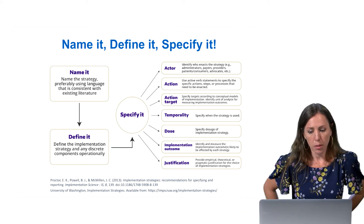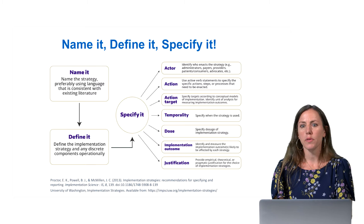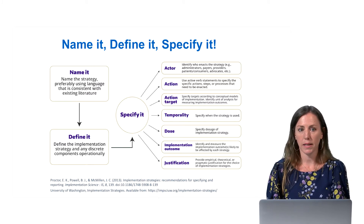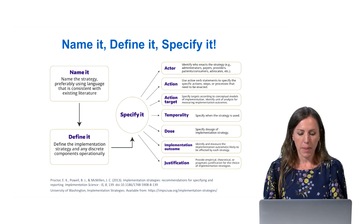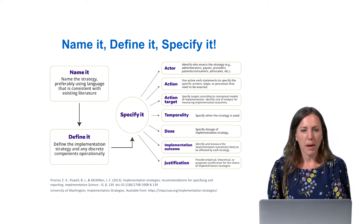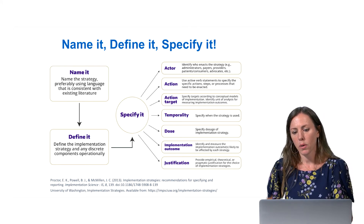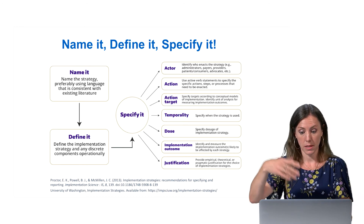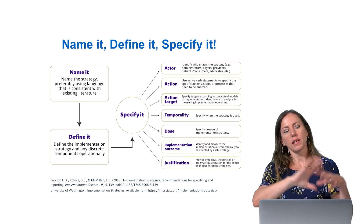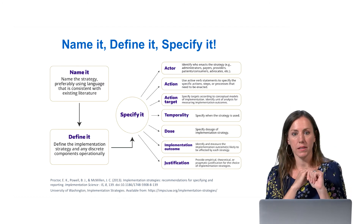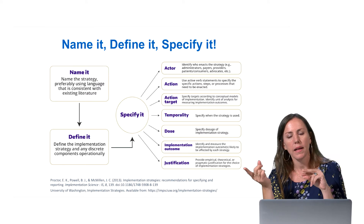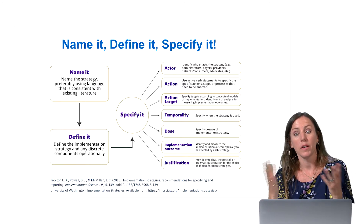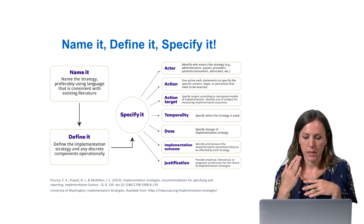As people have started to publish on implementation strategies, we're finding that you can say you're doing a training, but training can mean many things. Byron Powell, Enola Proctor, and others are working towards being really specific about — if you're doing an implementation strategy: who's leading it, who's the actor, what's the action, what's the goal, what's the time period, what's the dose, what's the ideal outcome, and why did you select it? Just getting more specific, because publishing on 'training as an effective strategy' without this information gives others nothing to work with. It's about building an evidence base to move the needle in terms of actually impacting implementation.